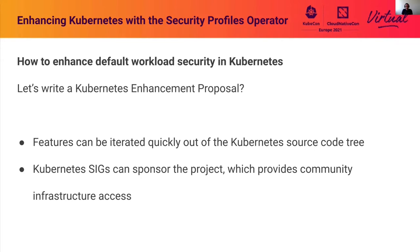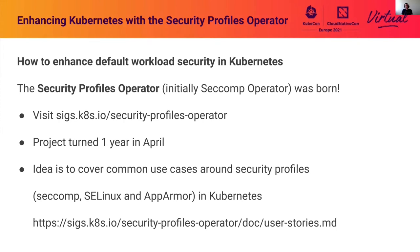So what do we want to do? Rather than writing a Kubernetes enhancement proposal, features can be iterated quickly out of the Kubernetes source code tree. Development cycles can be shorter, we can enrich faster testing, and feature creation is even easier — it's less effort for the community and maintainers. Kubernetes SIGs can sponsor such a project, providing community infrastructure, full CI testing in Prow, image promotion and distribution, and repository access management. This is exactly where the Security Profiles Operator — initially the SecComp Operator — was born. Visit sigs.k8s.io/security-profiles-operator. The project is sponsored by SigNode and lives in the Kubernetes SIGs namespace.